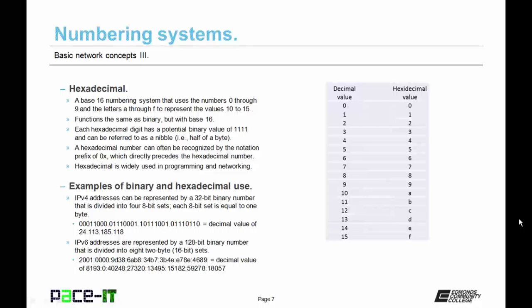Each hexadecimal digit has a potential binary value of 1111, or fifteen, and it can be referred to as a nibble as it's half of a byte. A hexadecimal number can often be recognized by the notation prefix of zero lowercase x, which directly precedes the hexadecimal number. Hexadecimal is widely used in programming and networking along with binary.